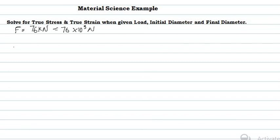Likewise for your diameter, even though you are often given the value in millimeters or centimeters, it should finally be in meters. So even if your original diameter is given as 12.7 millimeters, you convert it to 12.7 × 10⁻³ meters.